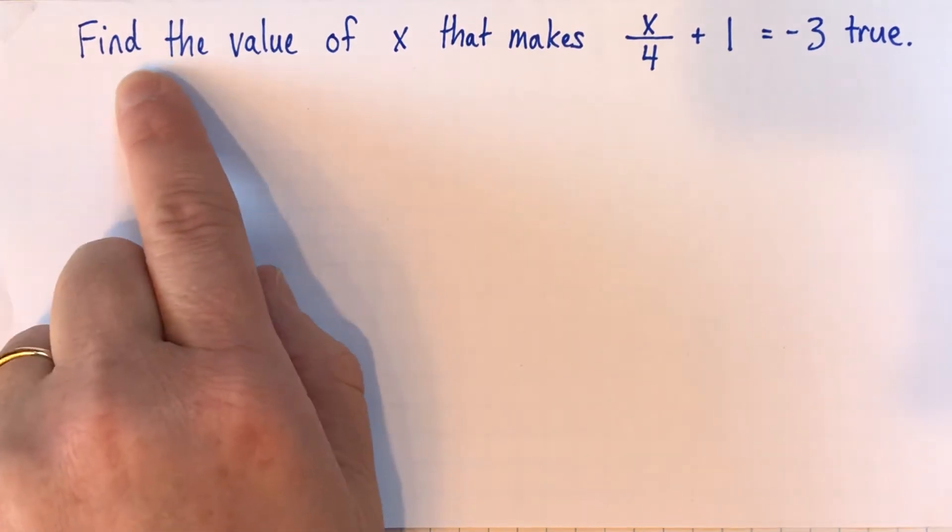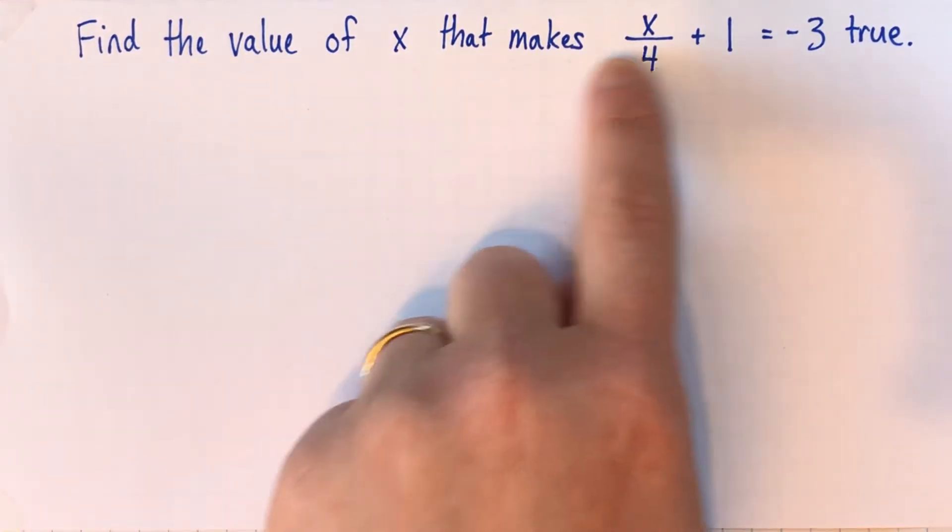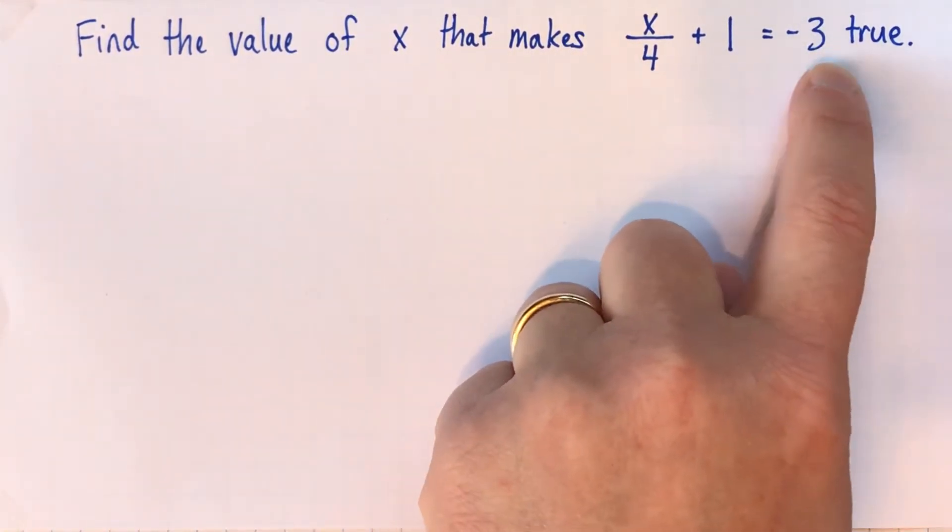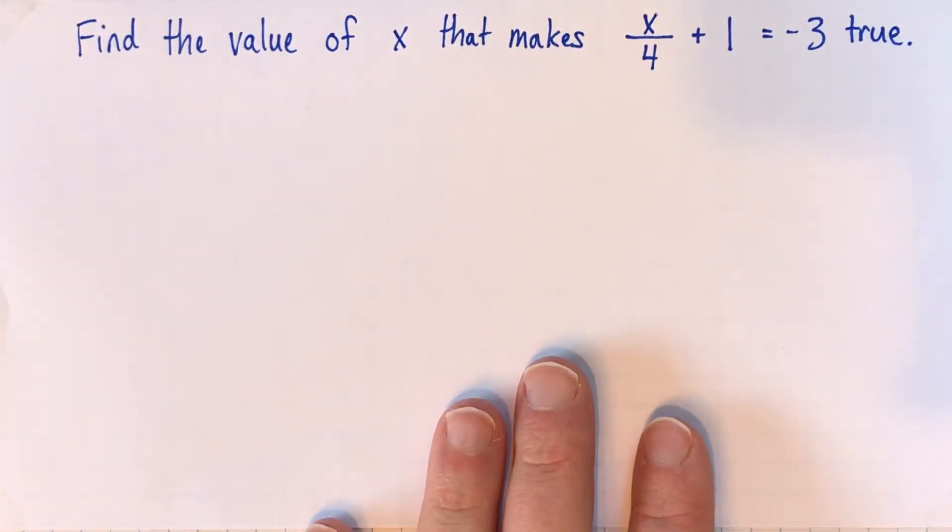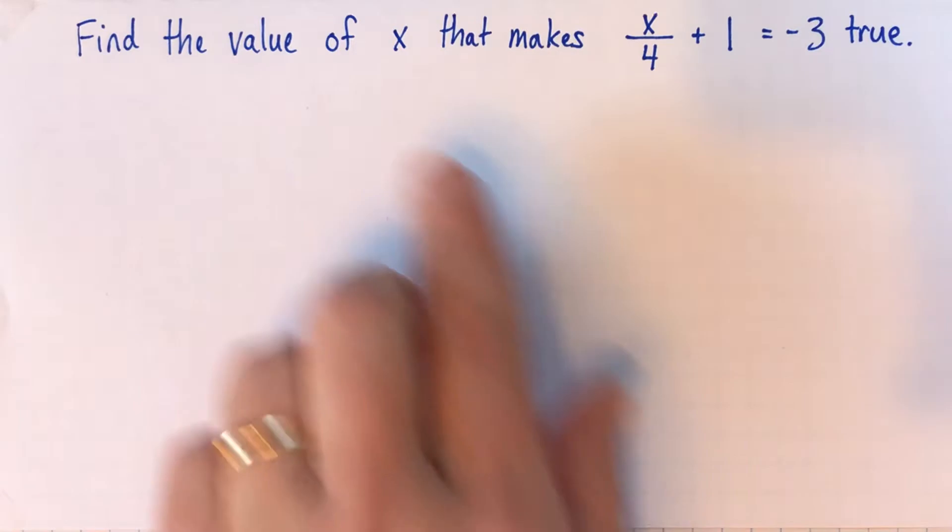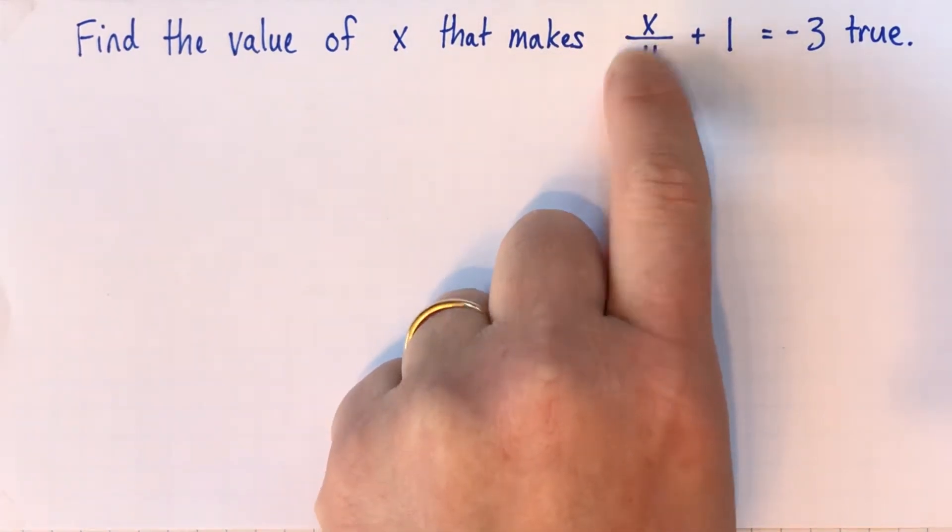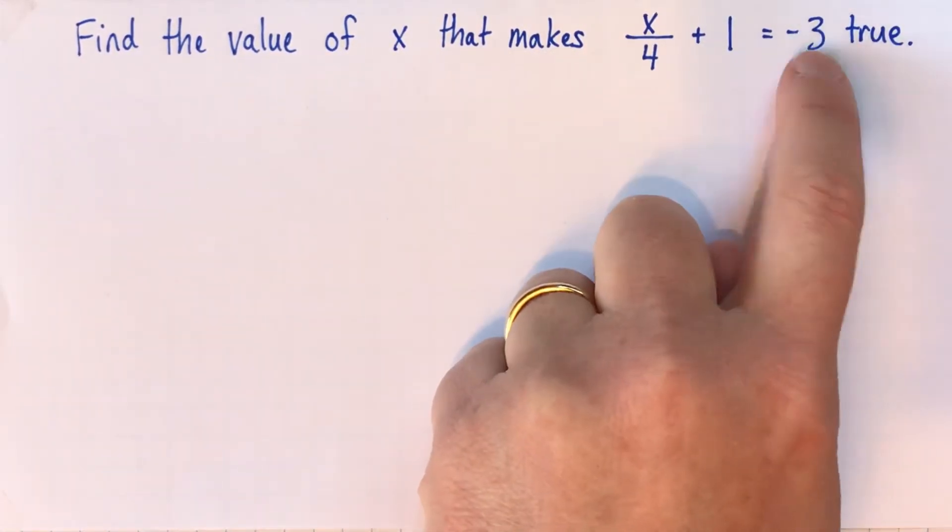So the question is worded, find the value of x that makes x divided by 4 plus 1 equal to negative 3 true. That means just exactly the same as asking someone to find the solution to the equation. So we want to know what number goes in here that would make the two sides the same or equal.